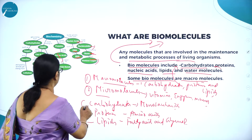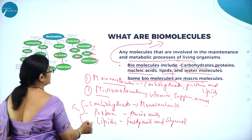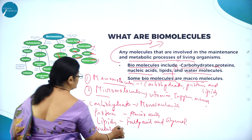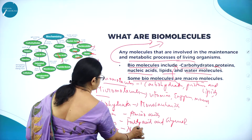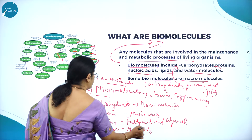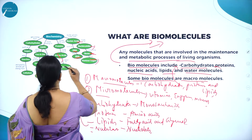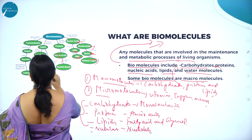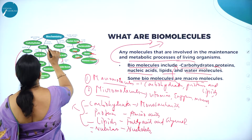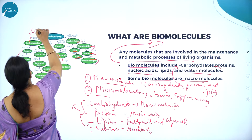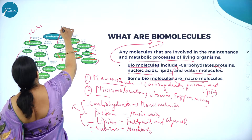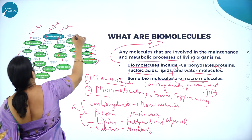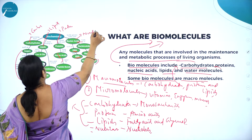Nucleic acids are made up of nucleosides and nucleotides. All these put together — carbohydrates, proteins, lipids, and nucleic acids — here you can see the fats with fatty acids and glycerol. So carbohydrates, proteins, lipids, and nucleic acids are the major categories of biomolecules.